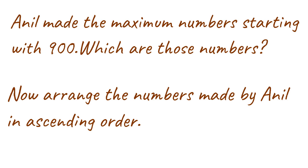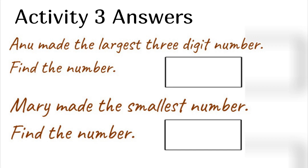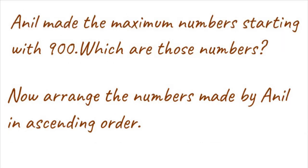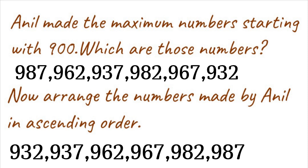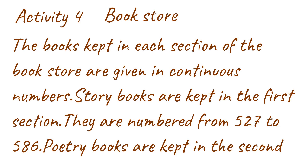Now arrange the numbers made by Anil in ascending order. Activity 3 Answers: The largest 3-digit number made by Anu is 987. The smallest 3-digit number made by Mary is 632. Numbers made by Anil starting with 900, arranged in ascending order: 932, 937, 962, 967, 982, 987.